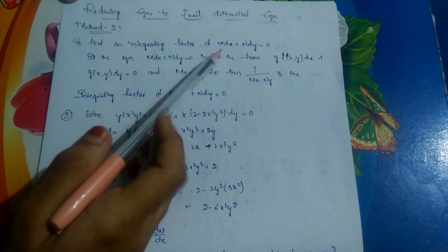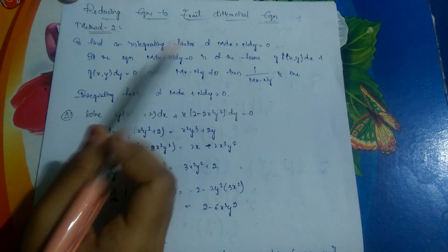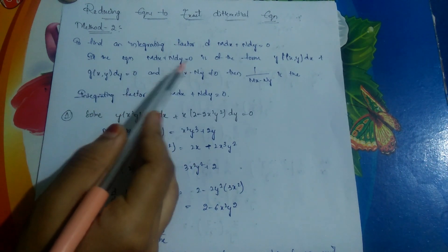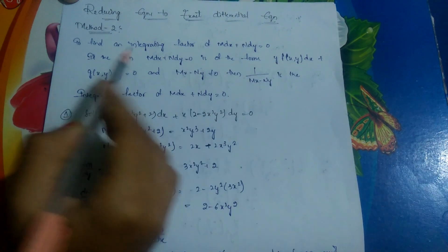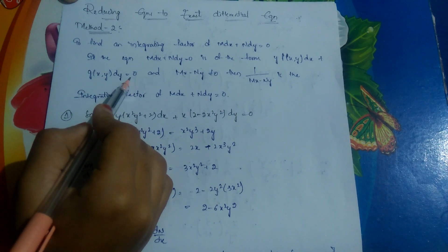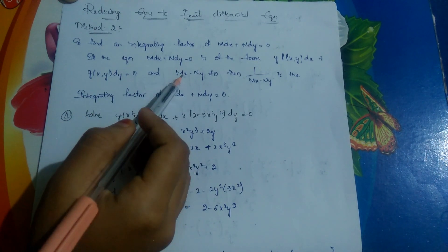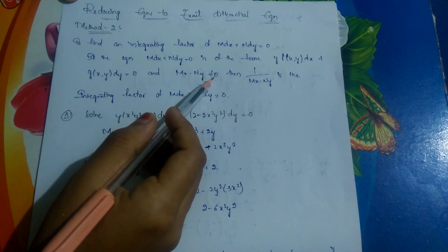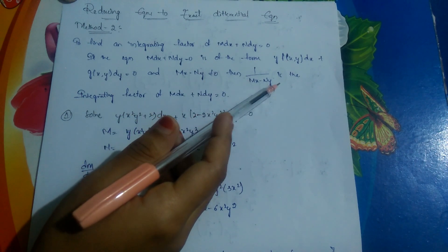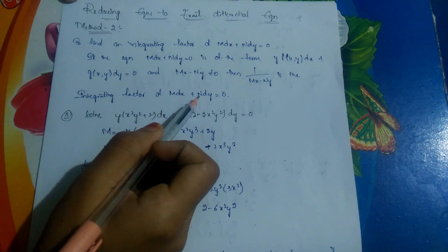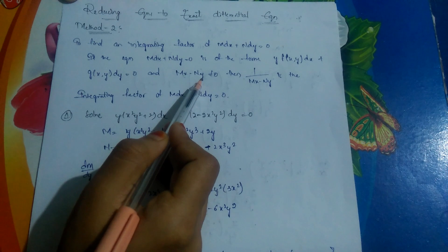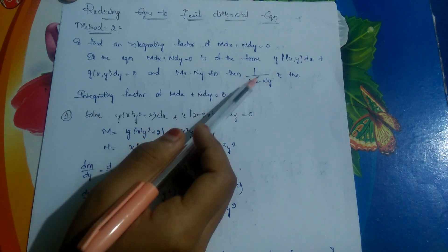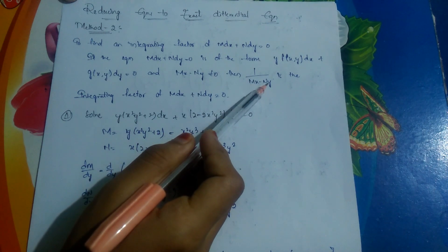To find an integrating factor of M dx + N dy = 0: if the equation is in the form y·f(x,y) dx + g(x,y) dy = 0, and Mx - Ny is not equal to zero, then 1/(Mx - Ny) is called the integrating factor of M dx + N dy = 0. We find Mx - Ny, verify it is not an exact differential equation, then use 1/(Mx - Ny) as the integrating factor.